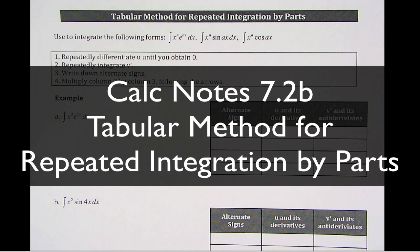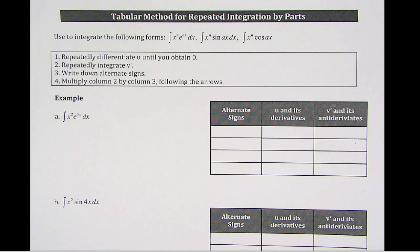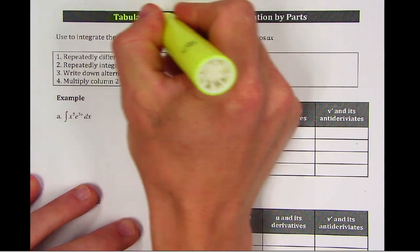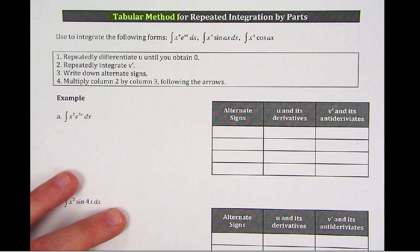So today we are going to further explore this idea that some of you have already been noticing, that when you have this kind of cyclical or repeating pattern - finding the integral, finding the derivative, finding the integral, finding the derivative - why don't we just do it all at the same time? And some of you even noticed that the signs alternate back and forth. So there's actually a method called the tabular method for repeated integration by parts. It's just a way of organizing what we're doing here.